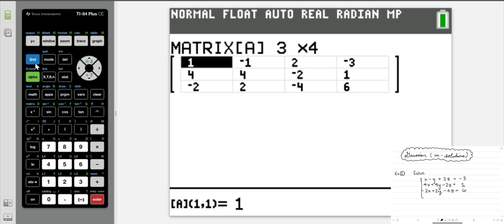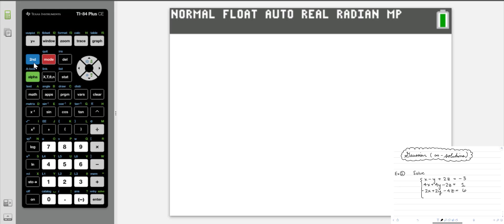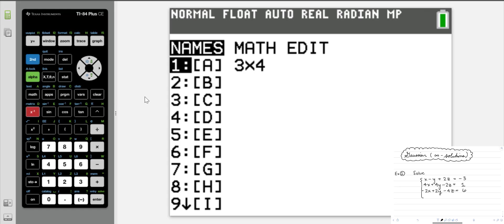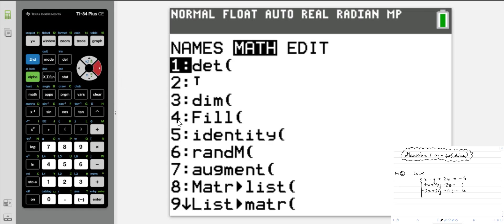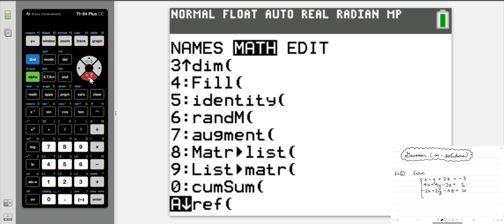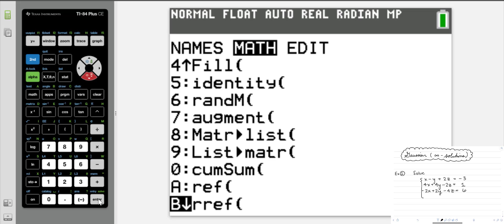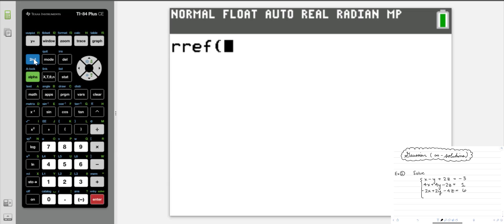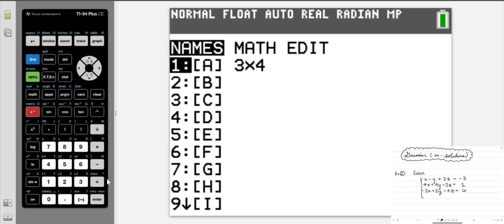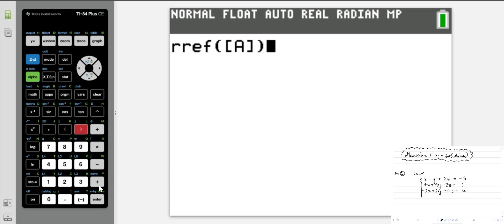We're going to quit back home, done entering in that matrix. Now we're going to tell the calculator to put the matrix into reduced row echelon form. We go back to the matrix menu, we tab over to math, and we look down at option alpha B. You can either tab down to it, or you can hit alpha B on your calculator. Hitting enter, now we need to tell the calculator which matrix we're going to do this on. On the names tab, hit enter on matrix A, close the parentheses.